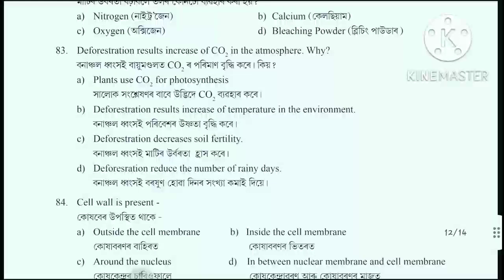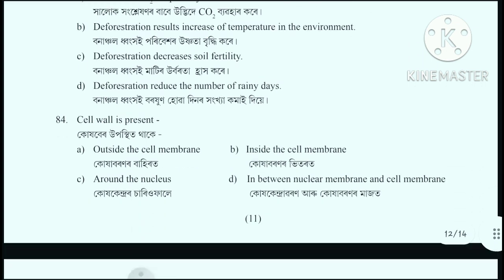Question number 83: Deforestation results in an increase in carbon dioxide in the atmosphere. Why? Because plants use carbon dioxide for photosynthesis - when trees are cut, this process stops. The correct answer is option A.